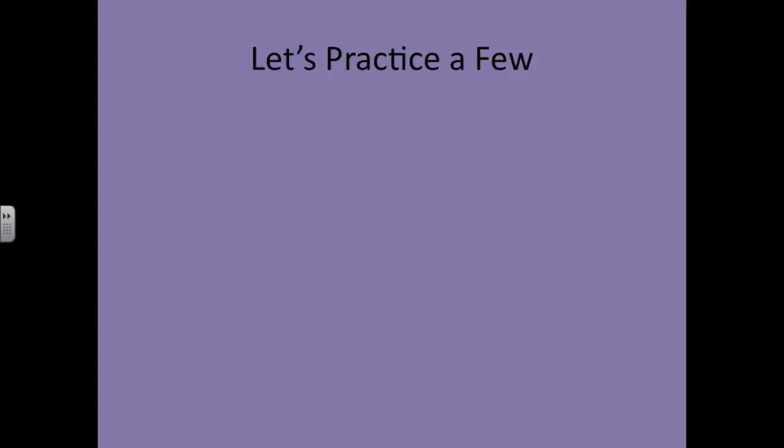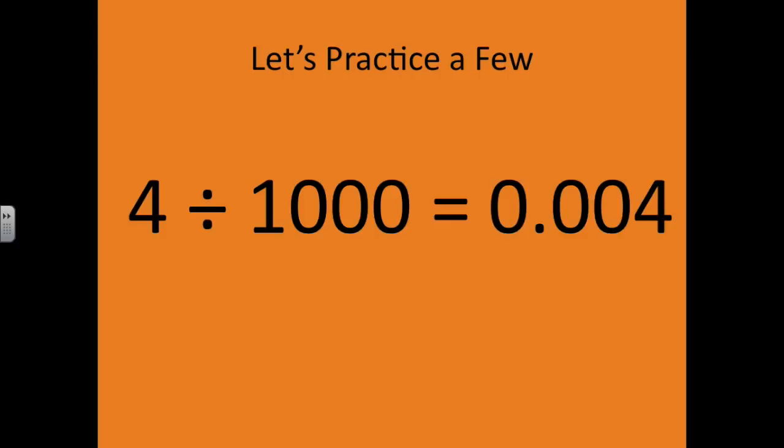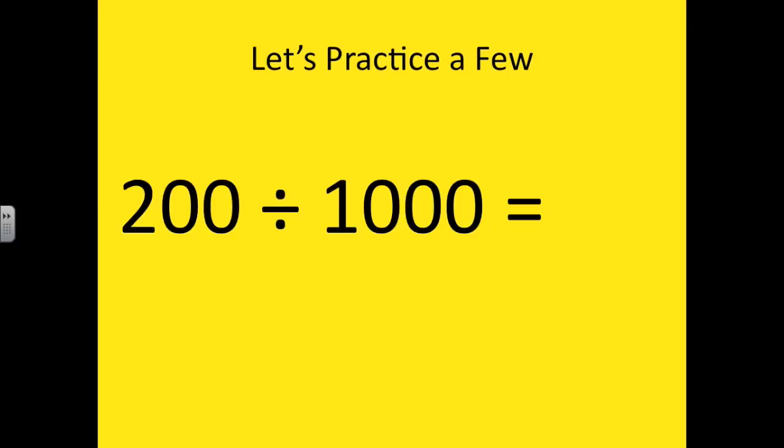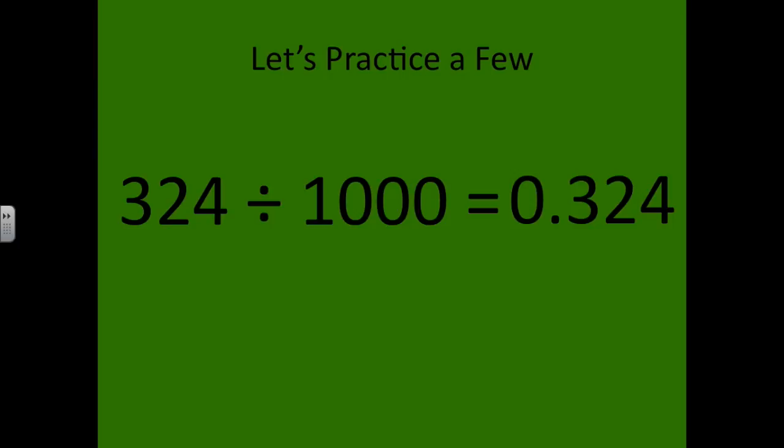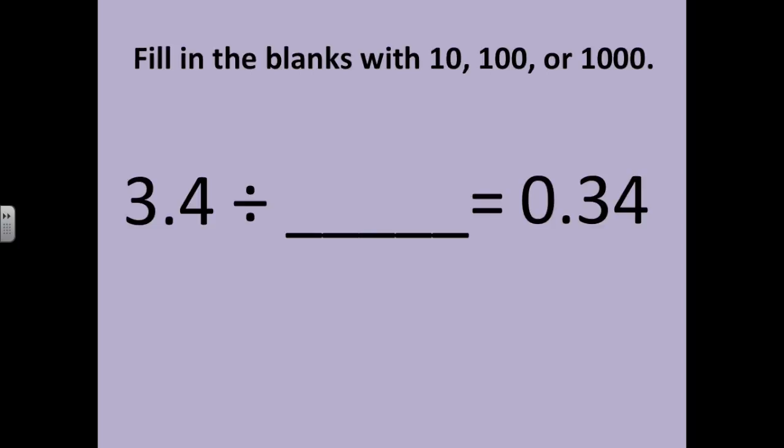Let's practice a few just to exercise our memories. 8 divided by 10: 8 tenths. 90 divided by 100: 9 tenths. 4 divided by 1 thousand: 4 thousandths. 200 divided by 1 thousand: 2 tenths. 324 divided by 1 thousand: 324 thousandths.